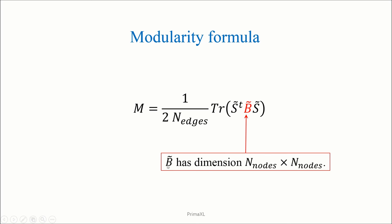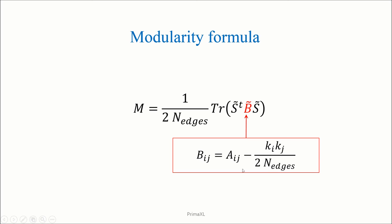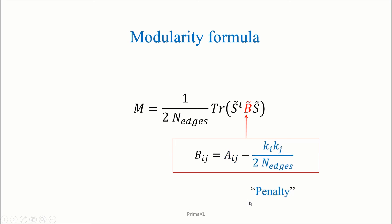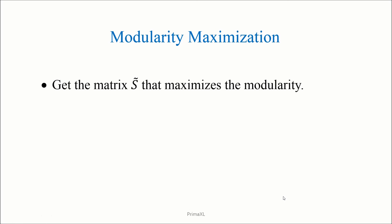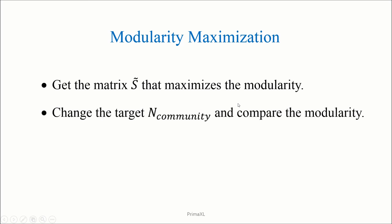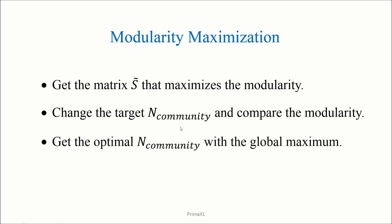The matrix B is a square matrix of size equal to the number of nodes. The elements of matrix B obey a specific formula: one term is the reward associated with putting connected nodes into the same community, and the other term is the penalty associated with random connections. So, the goal is to get the matrix S that maximizes the modularity. We can repeat the maximization after changing the total number of communities — 2, 3, 4, and so on — and then get the optimal number of communities which corresponds to the global maximum of the modularity.